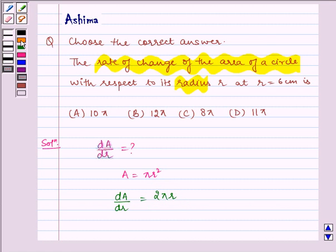Now, we have to find the rate of change of area of the circle with respect to radius when r = 6 cm.